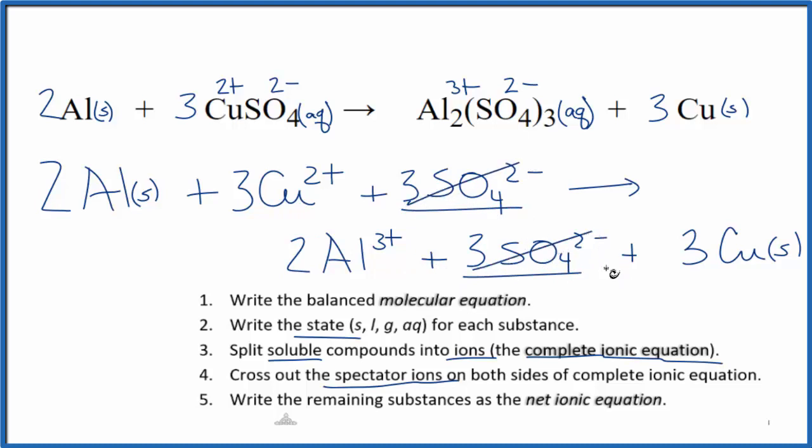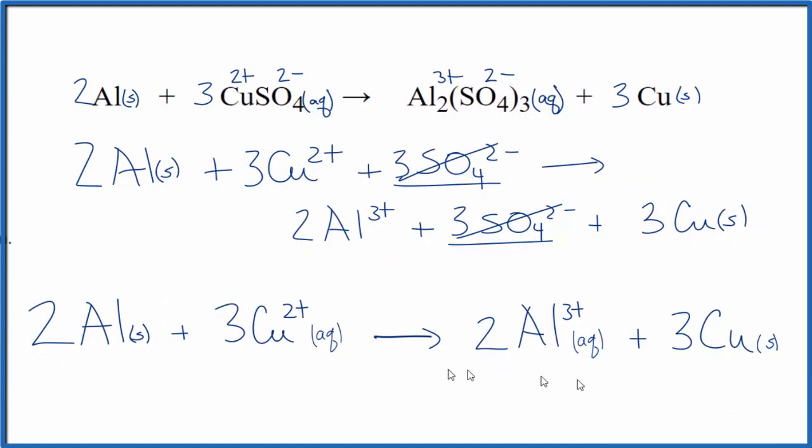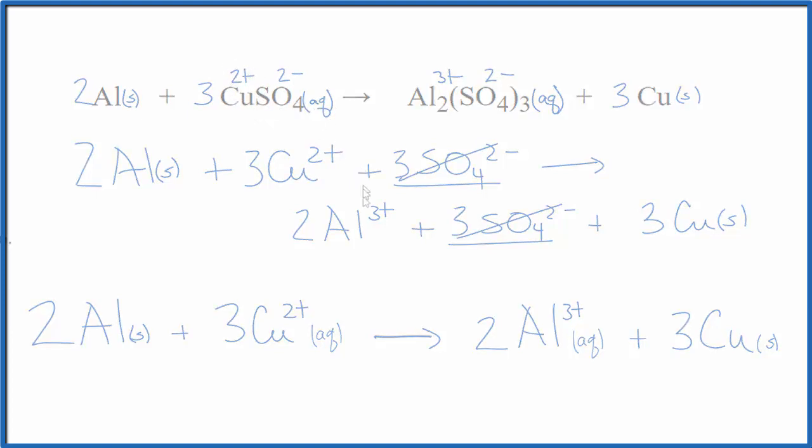So that's really all we can cross out. This is the net ionic equation, and we can clean it up and write it like this. And this is the net ionic equation for Al plus CuSO4, aluminum plus copper(II) sulfate. And this is Dr. B. Thanks for watching.